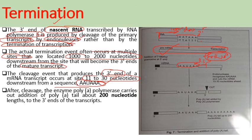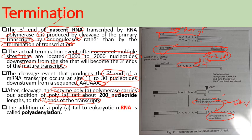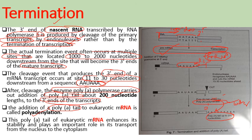After cleavage, the enzyme poly-A polymerase adds a poly-A tail of about 200 nucleotides in length to the three-prime end of the transcript. This process is known as polyadenylation. The poly-A tail enhances the stability of eukaryotic mRNA and plays an important role in its transport from the nucleus to the cytoplasm.